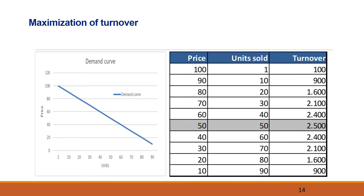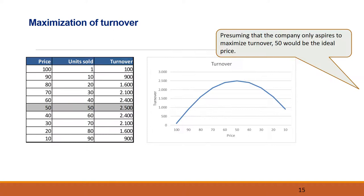Another important observation is that turnover is neither maximized at a price of 100 nor at a price of 10, but at a price of 50. This follows from the downward sloping demand curve — if the price goes down, sales go up. Turnover is calculated by multiplying the two figures. When reducing the price from 100 to 90, the effect on turnover of selling additional 9 units is greater than the loss related to selling at 90 instead of 100 on all units. This is so until a price of 50. At a price of 40, the increase in units sold is not enough to offset the price decrease on all units. This is clearly illustrated in the chart, which shows that turnover peaks at a price of 50. Presuming the company only seeks to maximize turnover, the ideal price would be 50.